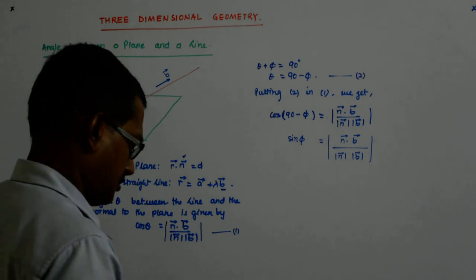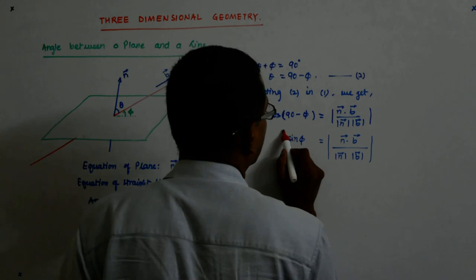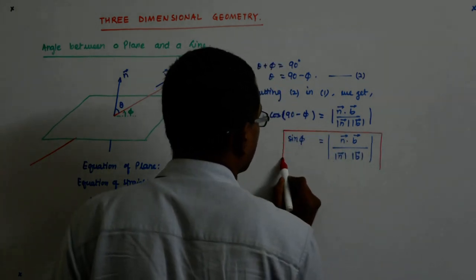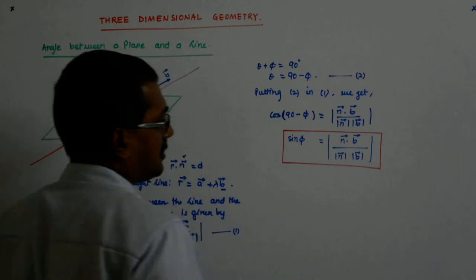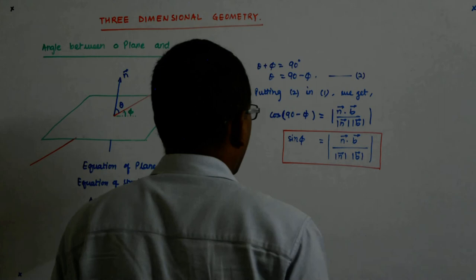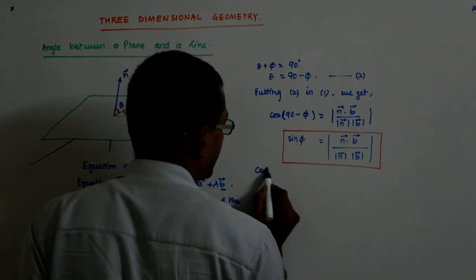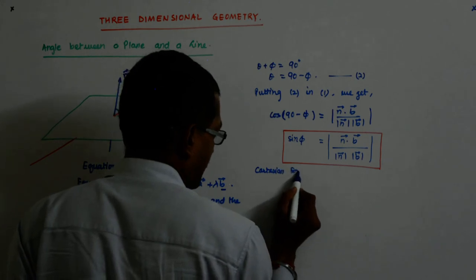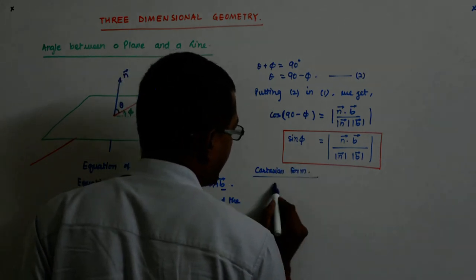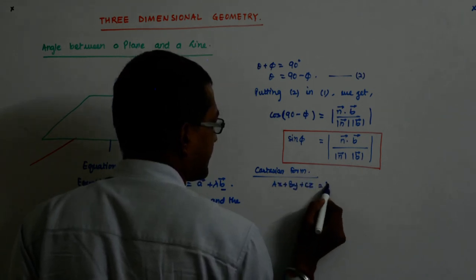Right? So, this is the angle. So, phi is sine inverse that. Phi is sine inverse that. Now, obviously, we always do the Cartesian form. We always do the Cartesian form. And there,